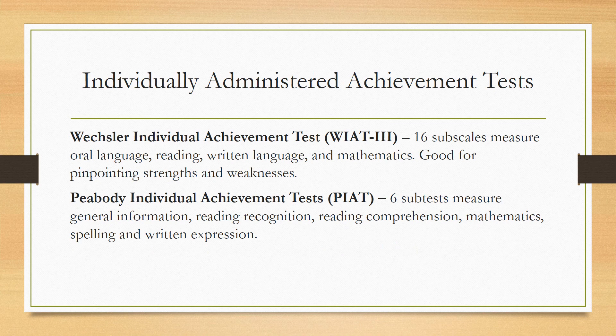Individually administered achievement tests include the Wechsler Individual Achievement Test (WIAT-3), which has 16 subscales measuring domains like oral language, reading, written language, and math. You don't have to use the whole test — you can use a subscale if you're just looking at math, for example. It's good for pinpointing strengths and weaknesses. The Peabody Individual Achievement Test (PIAT) has six subtests measuring general information, reading recognition, reading comprehension, math, spelling, and written expression.